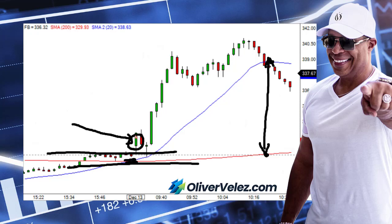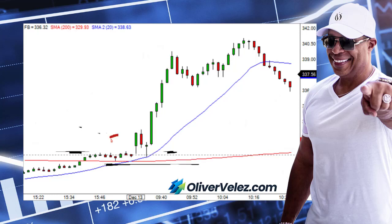Facebook opens right in the best location possible, which is just above the narrow state. If it opened down below and produced a red bar, that would be a perfect open just below the narrow state. But Facebook opens just above the narrow state and gives you a green bar — that's beautiful. You could buy into this bar or above the high of that bar.